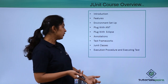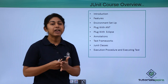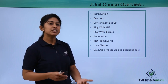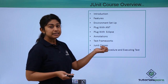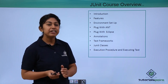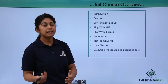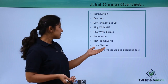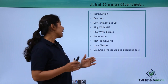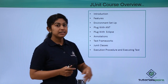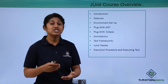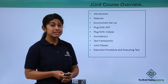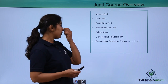The next is annotations of JUnit, then the test framework. We have different criteria and different sections in the JUnit test framework, which we will be covering. Then JUnit classes — different classes like the Assert class, TestCase class, and TestSuite class — and the methods of all these classes will be explained. Then the execution procedure: how a program is written in JUnit and how it is executed as a test suite.